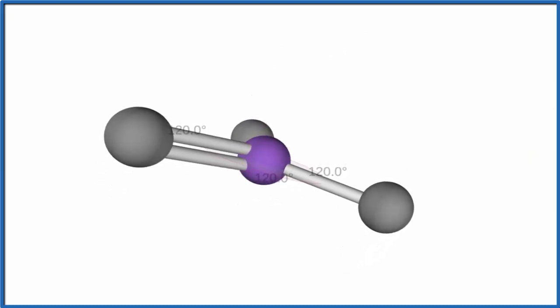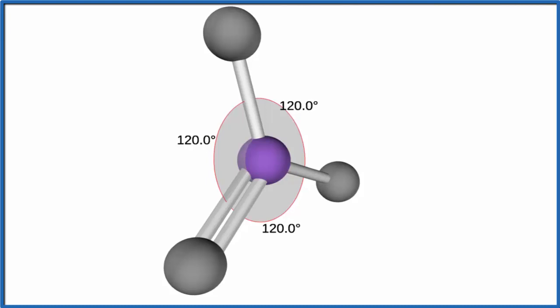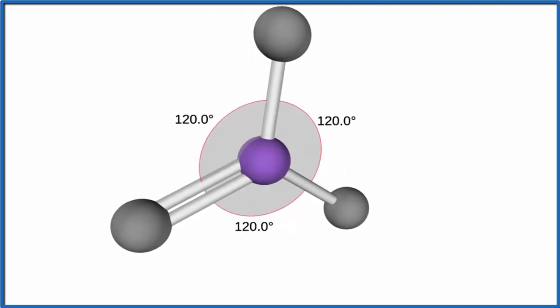But for the nitrate ion NO3-, there are no lone pairs. We have this trigonal planar molecular geometry. The bond angle between the atoms is 120 degrees.